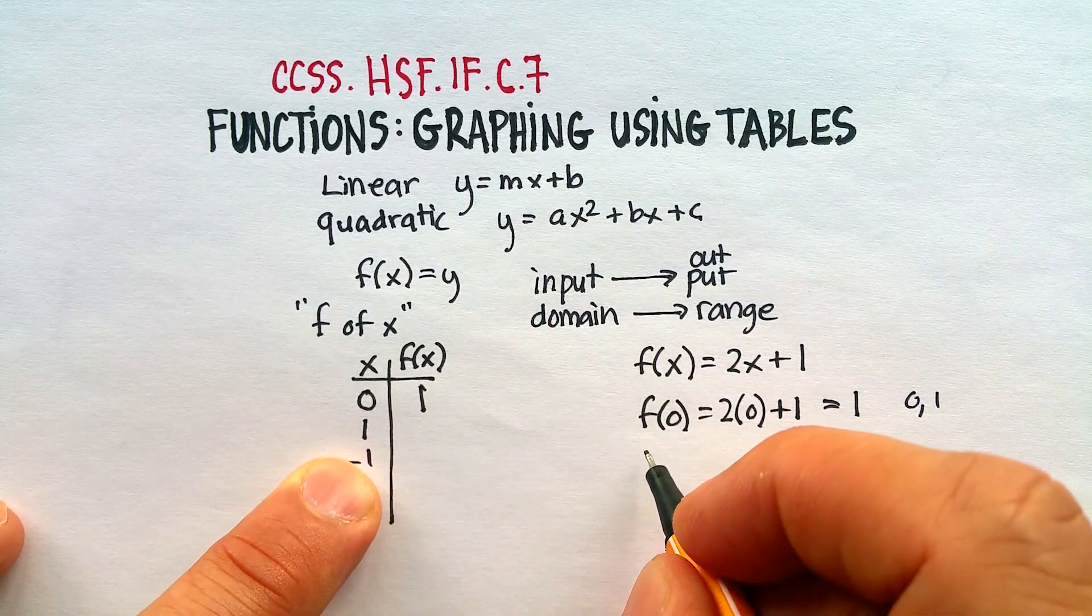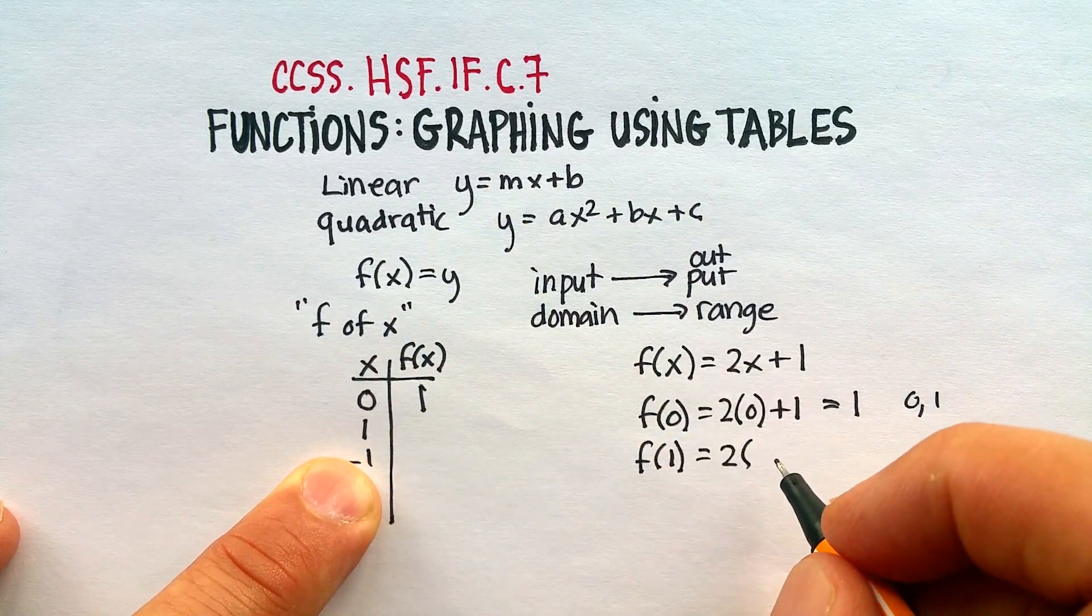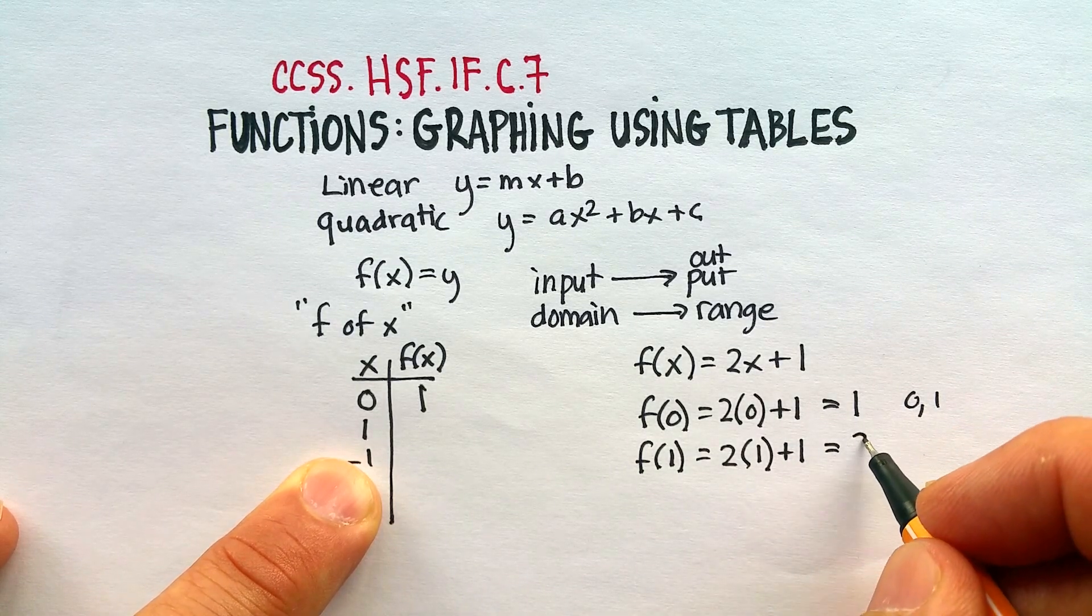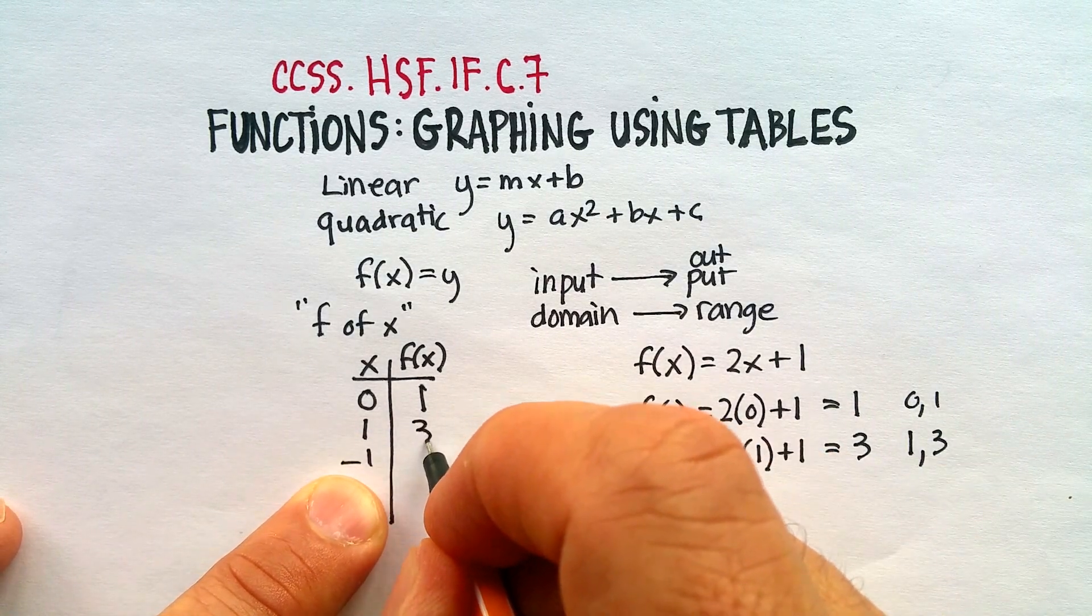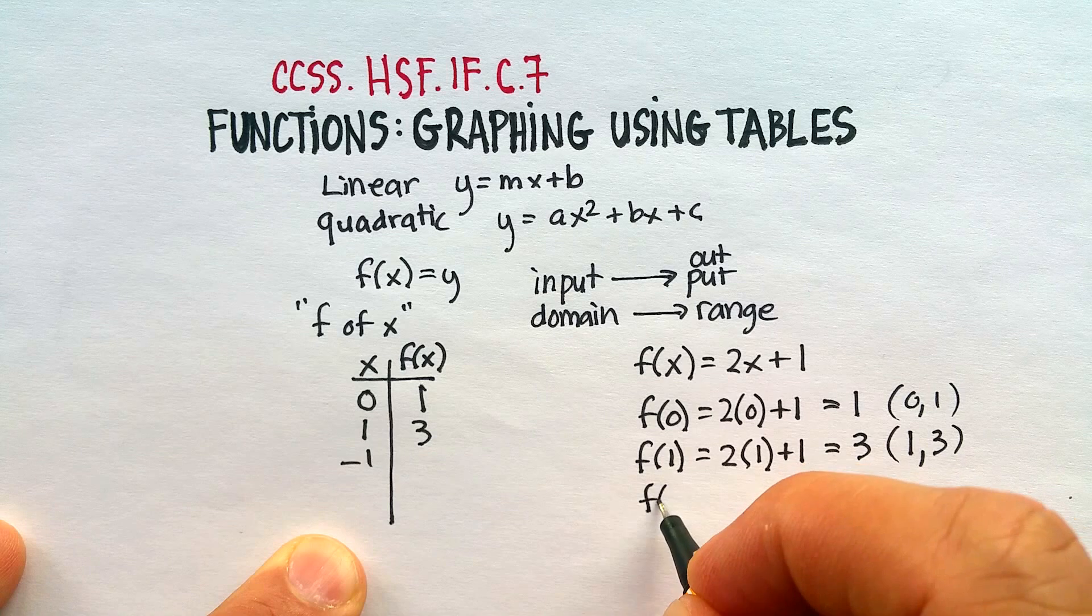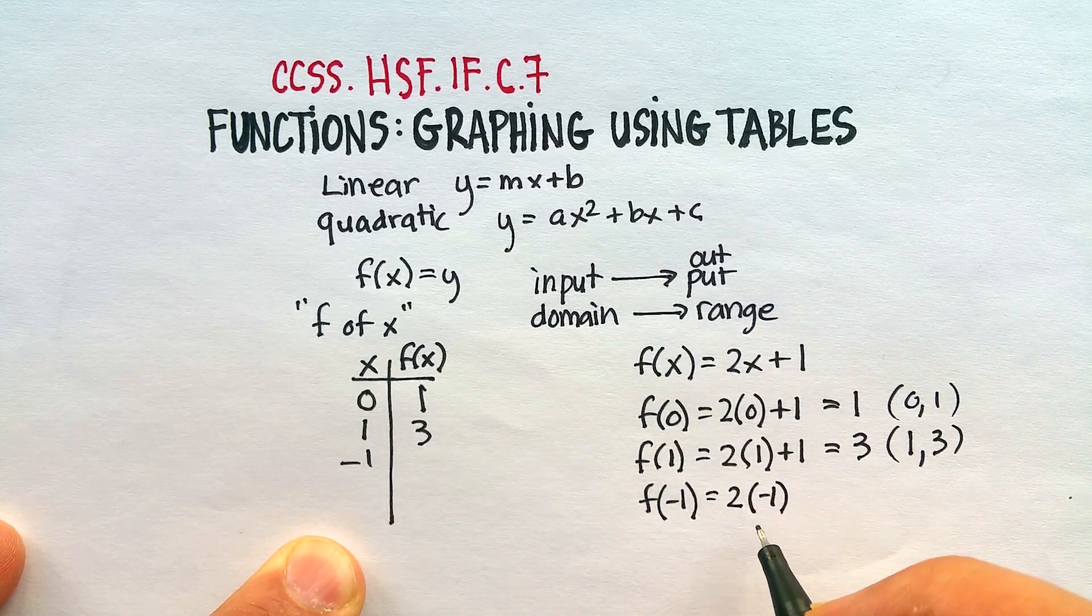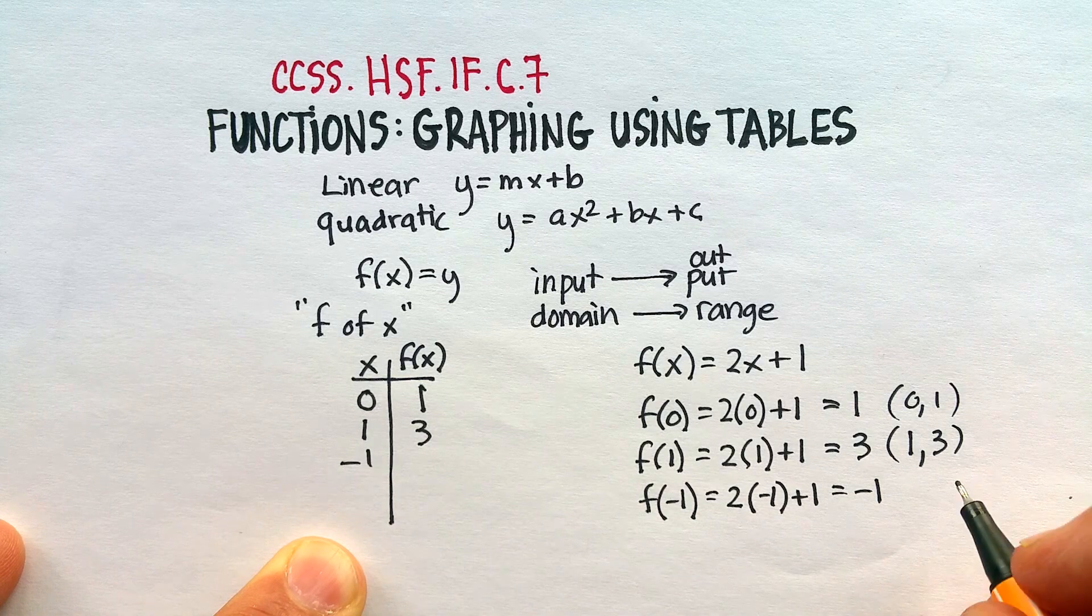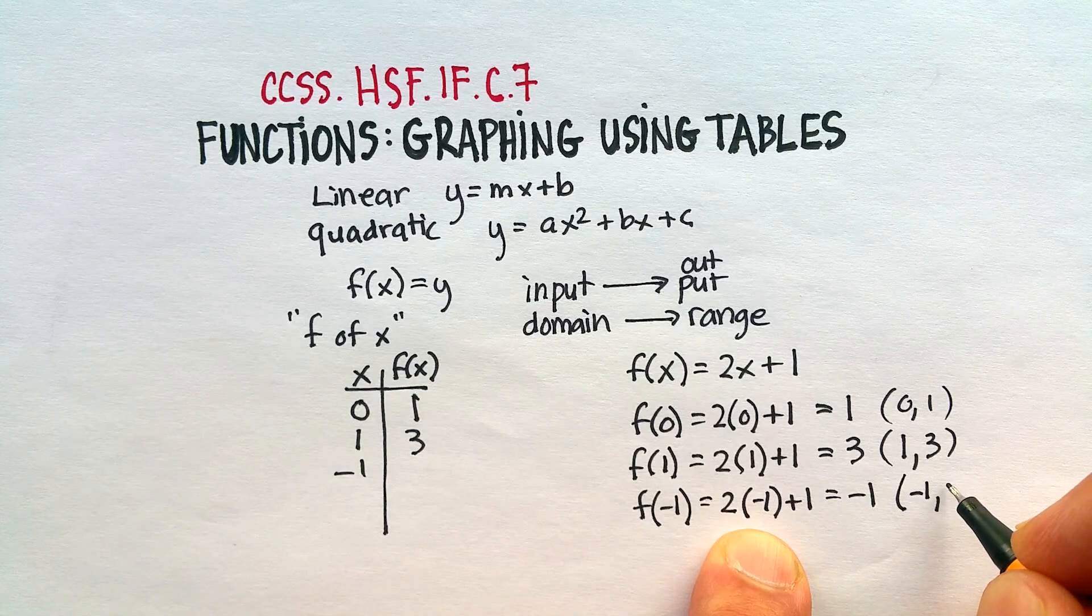You would get 2 times 0 is 0, plus 1 is 1. The ordered pair that you get here would be 0, 1. So we would go ahead and start graphing that. So from this chart, and actually, let me just finish these first, and then we'll start graphing. If I were to put in 1 as my input, I would say f of 1. Replace the x with 1. 2 plus 1 is 2, plus 1 is 3. Therefore, your ordered pair would be 1, 3.